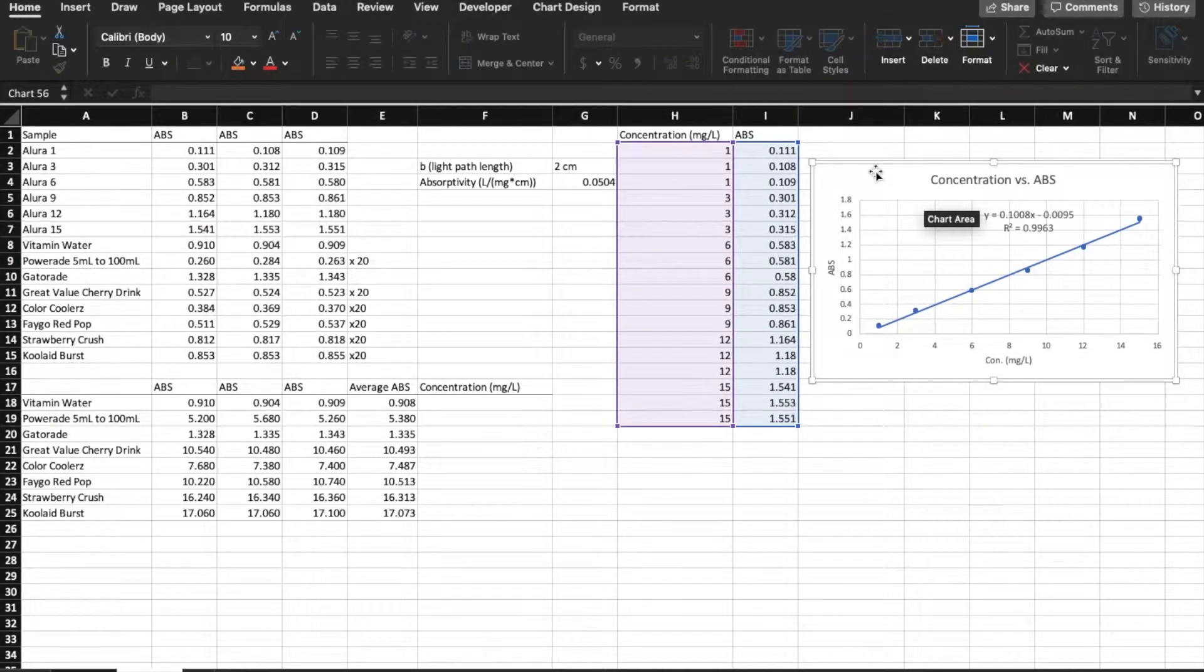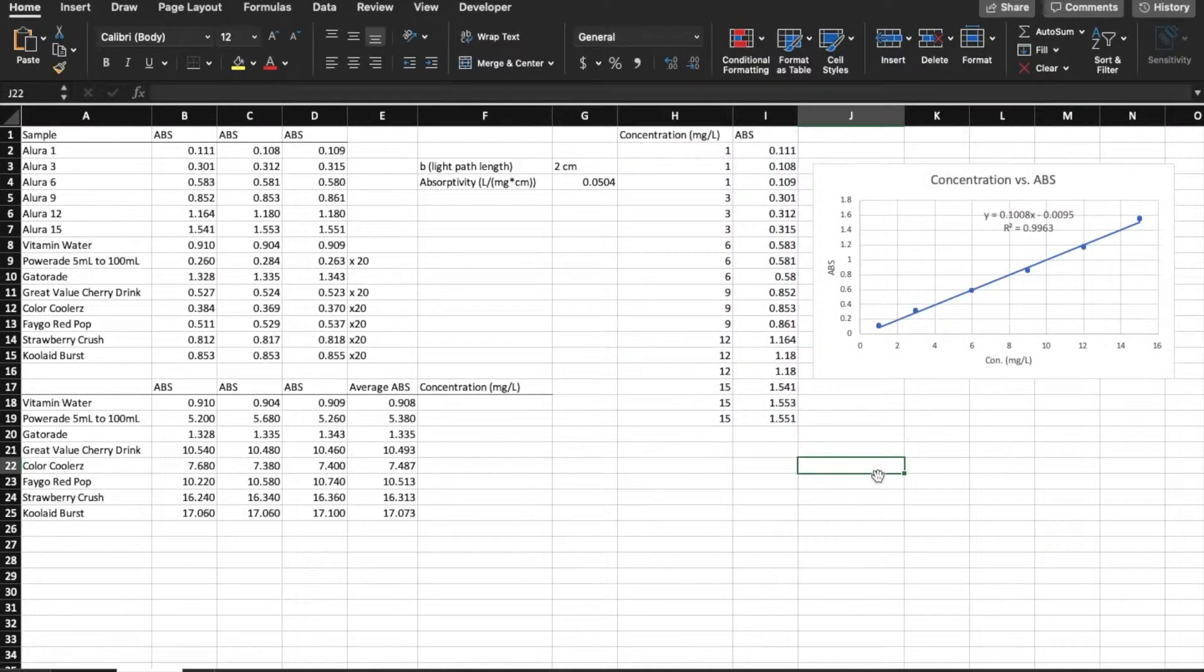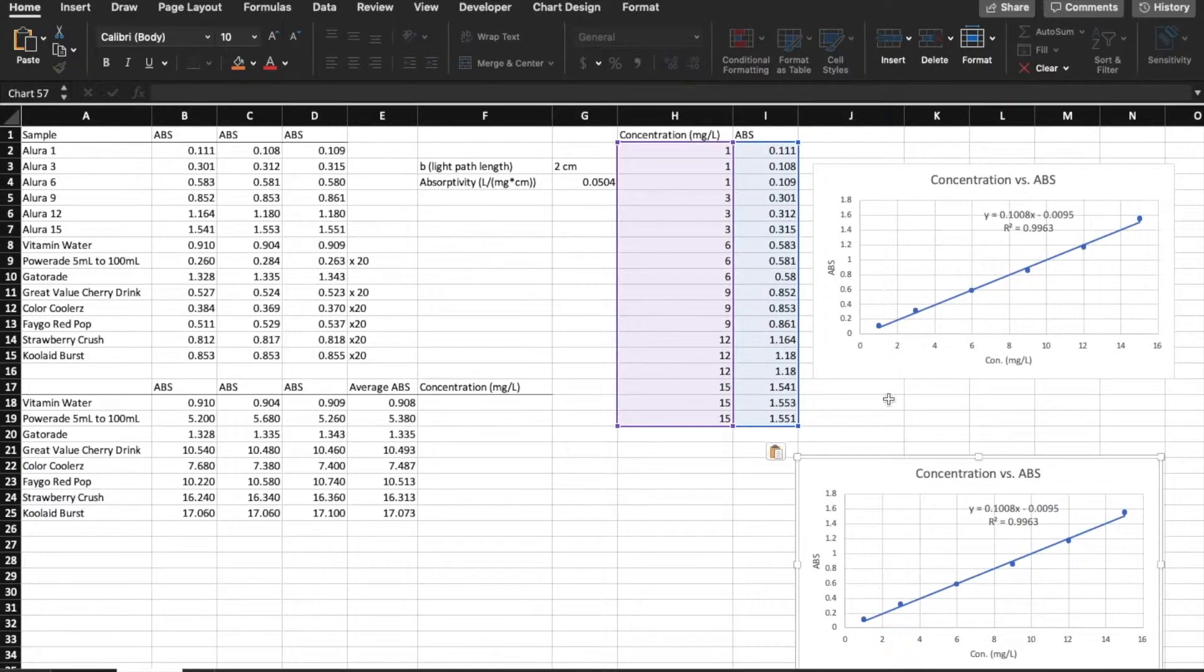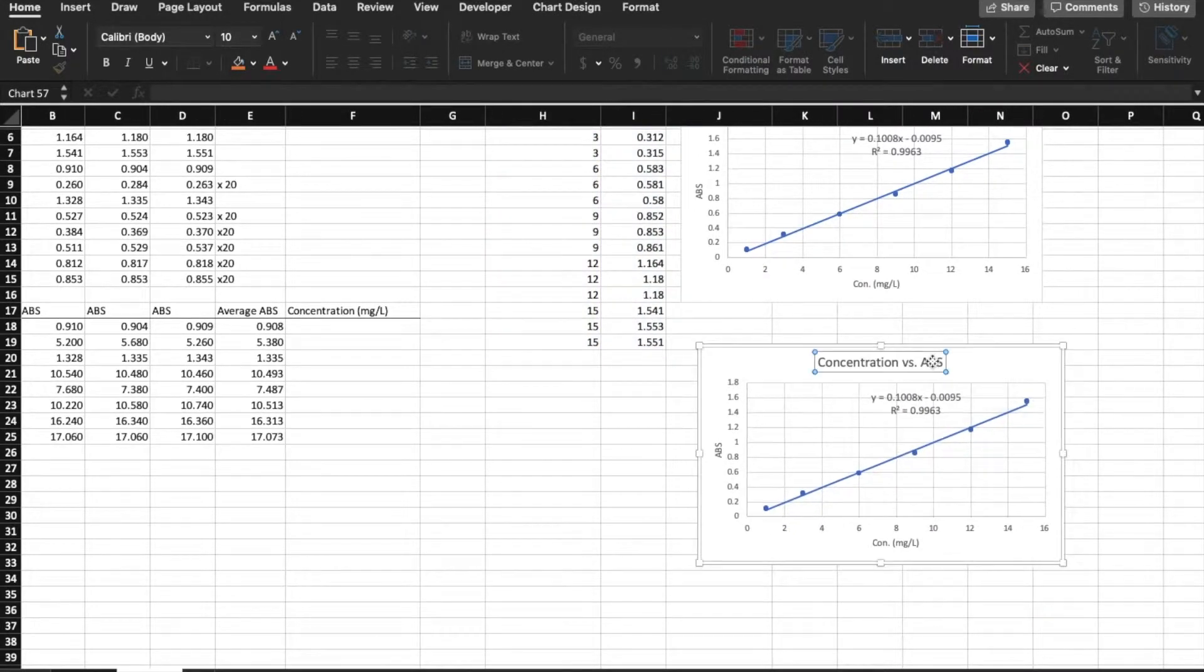So next, I'm going to copy this graph and I'm going to paste it down below it. This is simply just so I don't have to do all the work I did before. And I'm going to change this to absorption versus concentration. So this time the absorption is going to be on the x-axis and the concentration on the y-axis. This is the standard curve and this is going to help us find the concentrations of the other solutions such as Gatorade and Powerade and all that stuff.